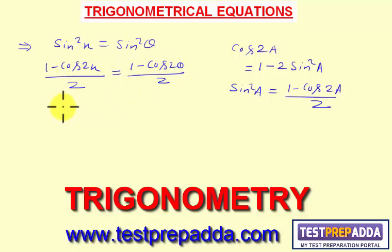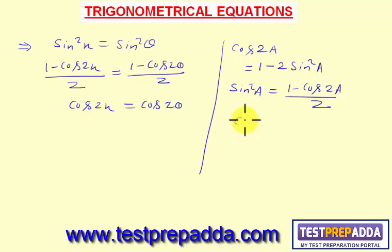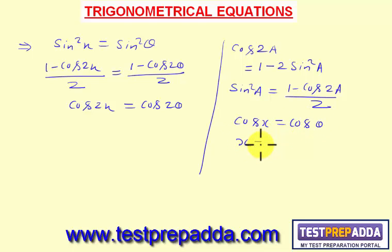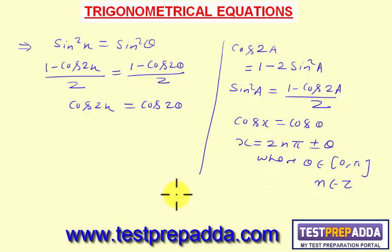Solving this, it becomes cos 2x = cos 2θ. Now recall the general solution for cos x = cos θ, which is x = 2nπ ± θ, where θ ∈ [0, π] and n belongs to integers.